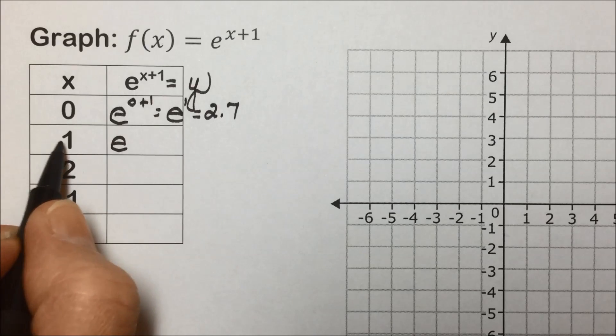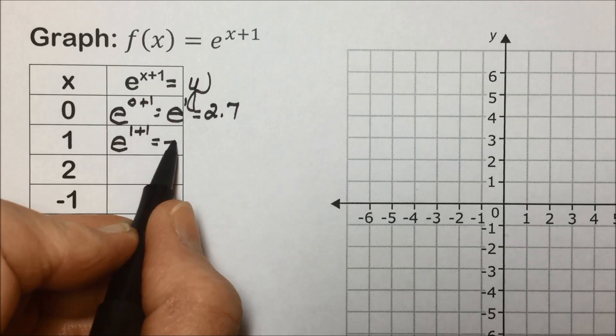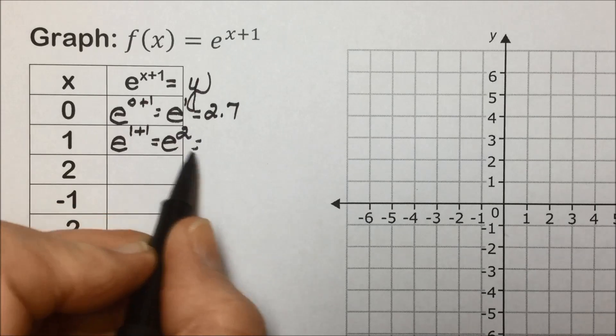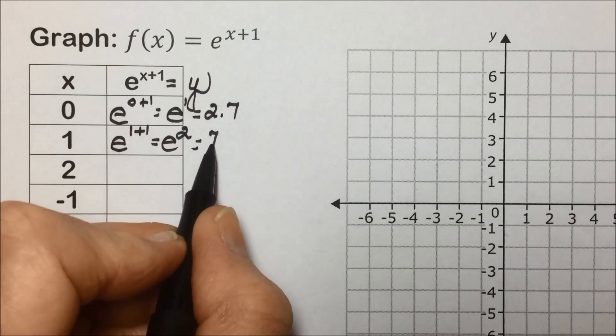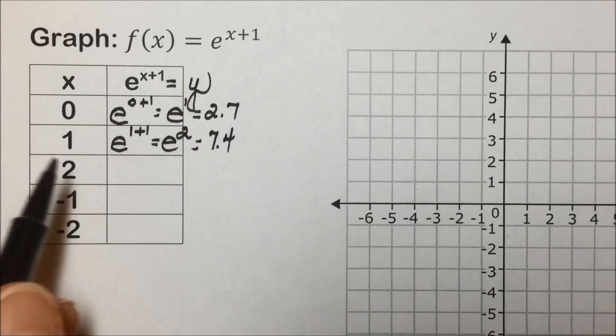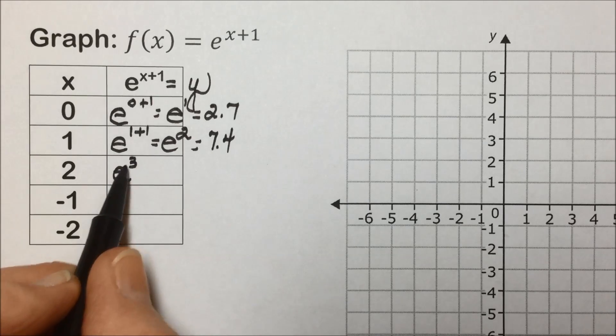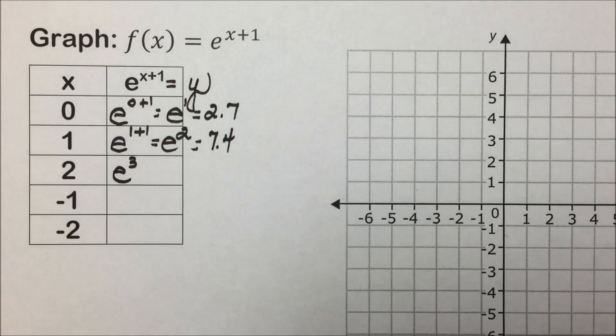If x is 1, we would have e to the 1 plus 1 or e to the second power, and we had that in the previous graph. That results in 7.4. We would end up with an x of 2 having e to the 2 plus 1 or 3rd power. It's going to be off our graph. It's getting ever larger.